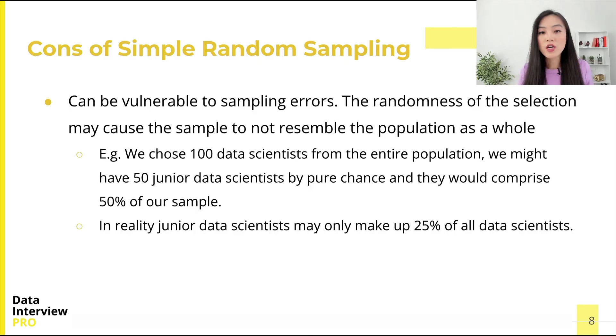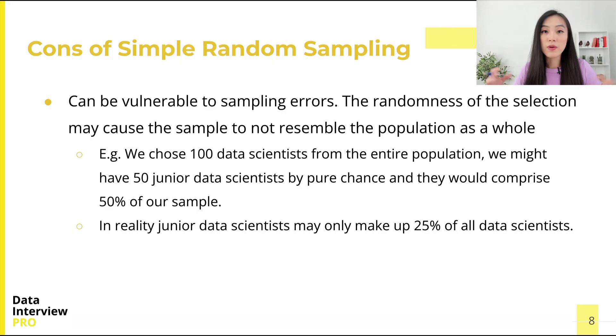The technique we will talk about next will attempt to overcome this problem by using information about the population to choose a more representative sample. As promised, we learned simple random sampling. There are three more sampling methods to introduce, and in the next video, we will look at systematic sampling. Stay tuned.